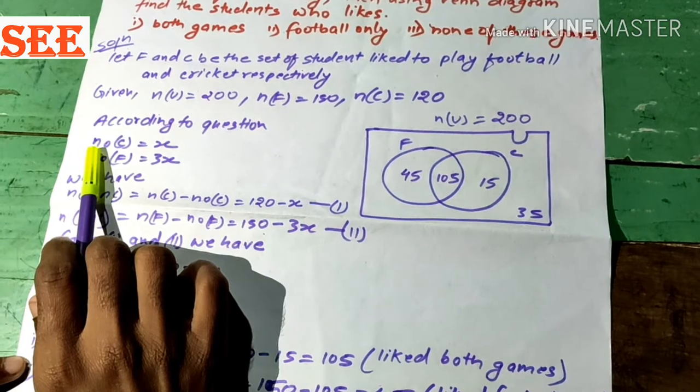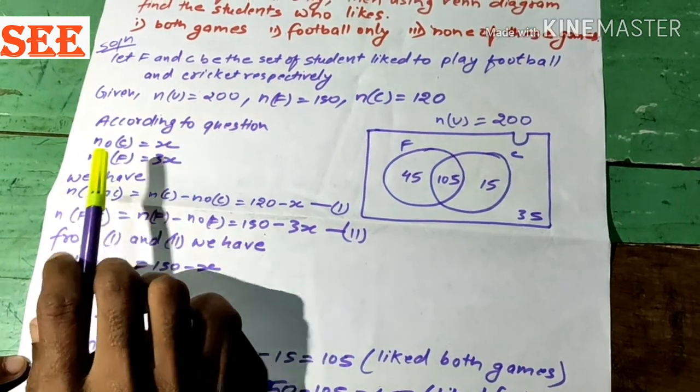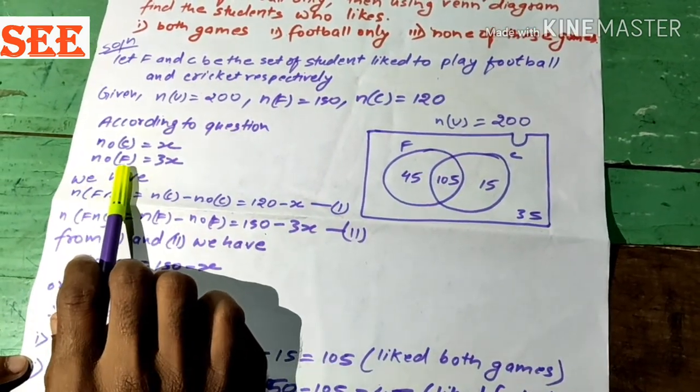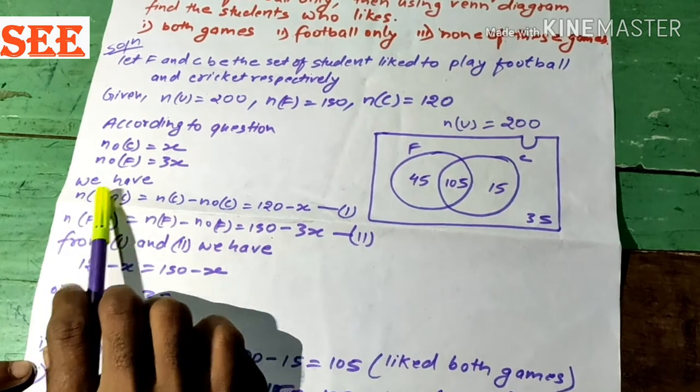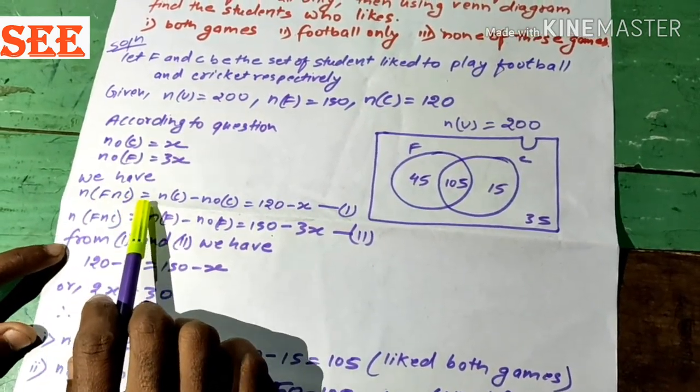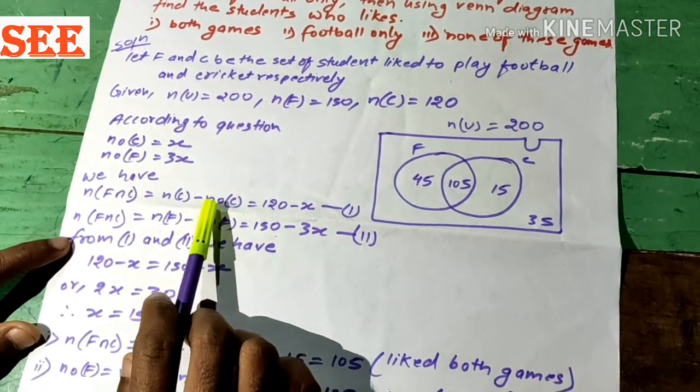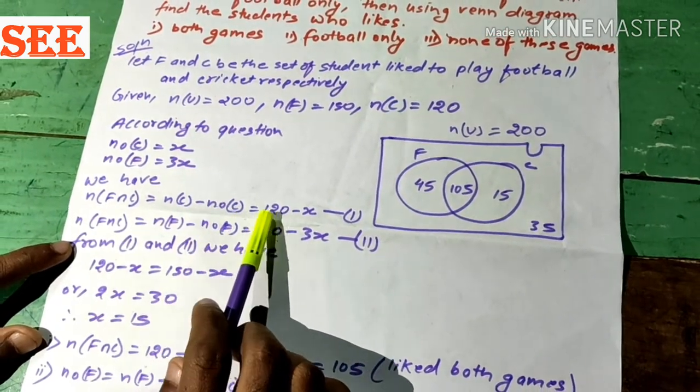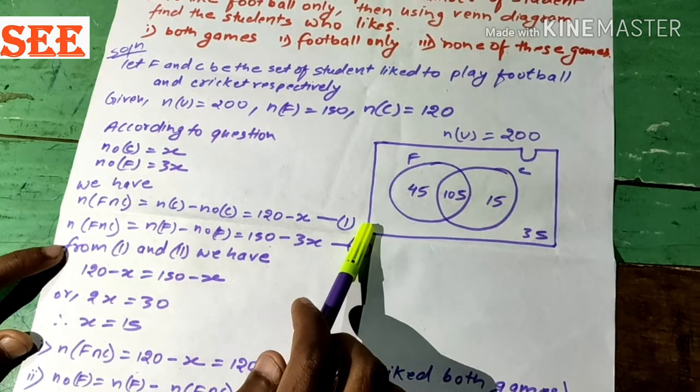According to question, only C = x and only F = 3x. We have n(F ∩ C) = n(C) - n(only C) = 120 - x. Let it be equation 1.